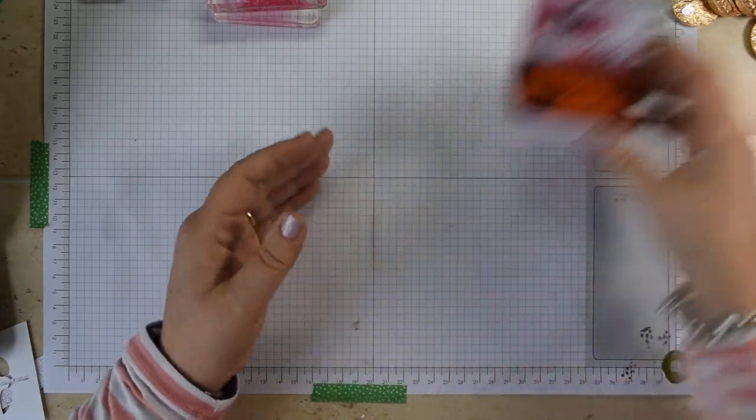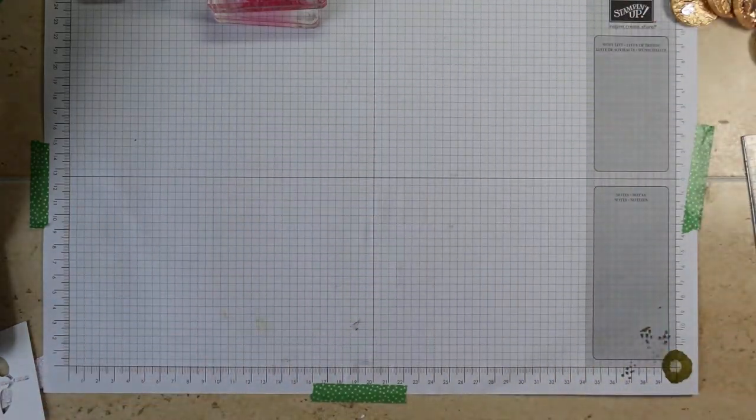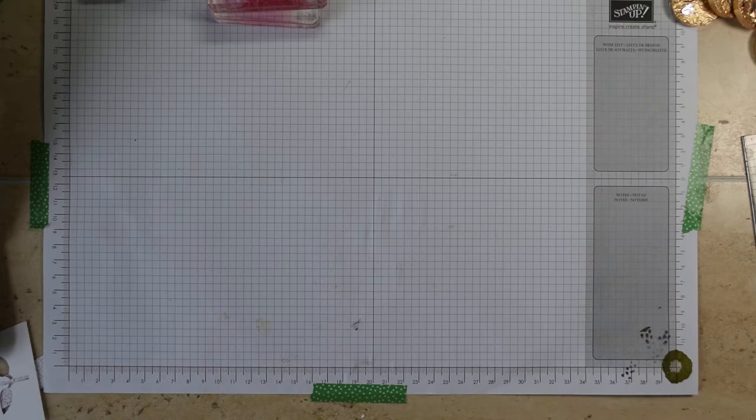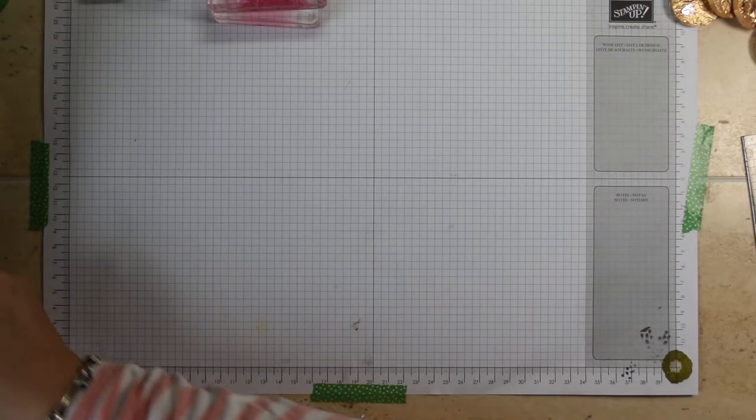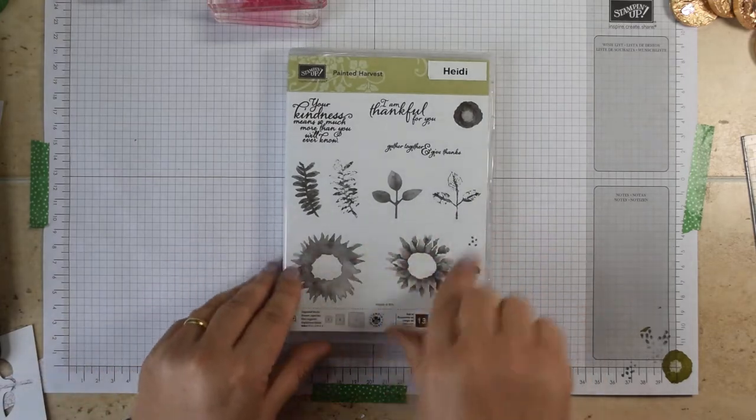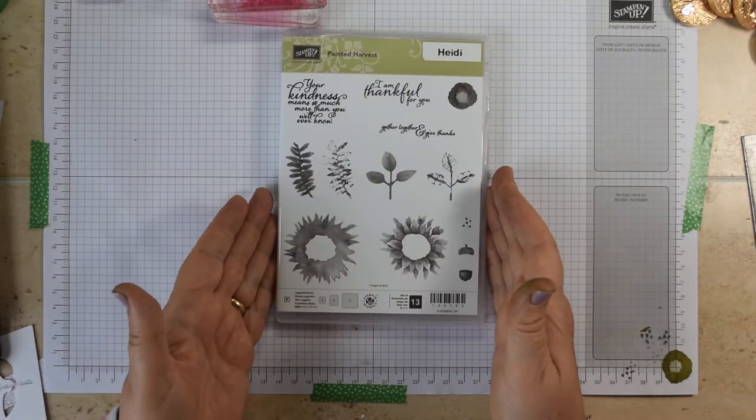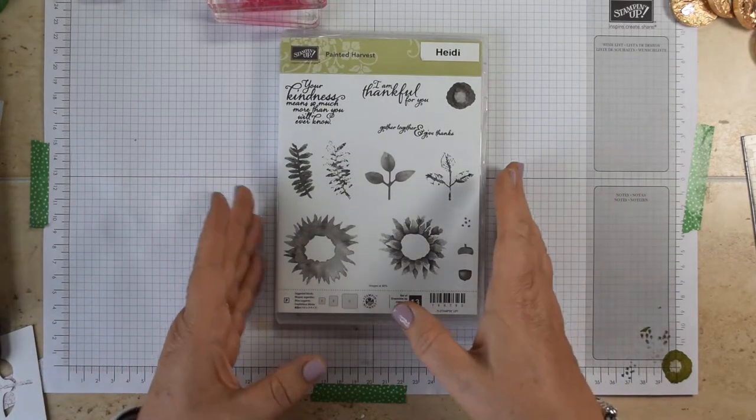That's what I'm going to make today. I've made it using the beautiful Painted Harvest stamp set which is proving to be an absolute favorite with lots of my customers. I think it's because you can get so many variations. This is the stamp set here which doesn't look very inspiring as it is, but once it's stamped it is beautiful.